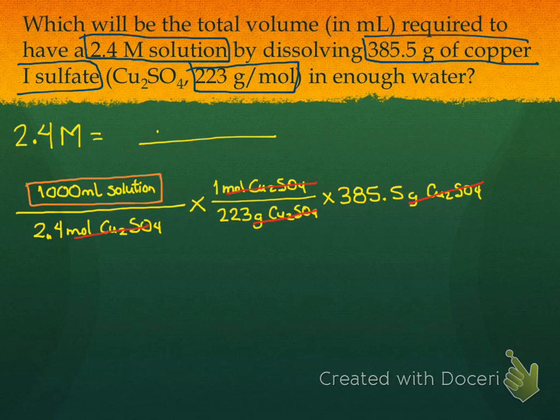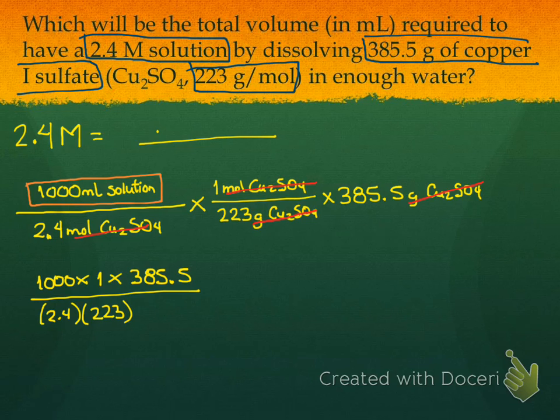What will be the result of doing this? Milliliters of solution. Once I cancel all the units, what I will do is I will multiply 1000 times 1 times 385.5 divided by 2.4 times 223. Okay. And these are already milliliters.